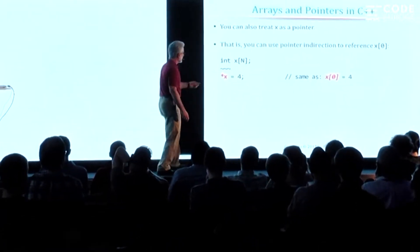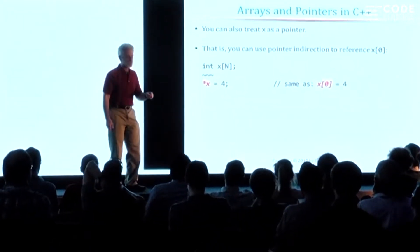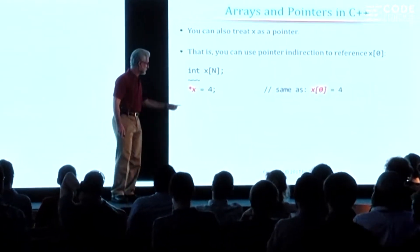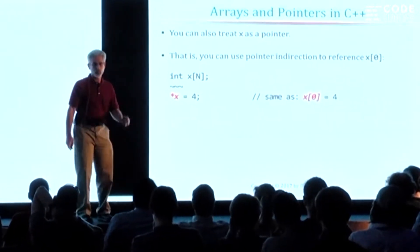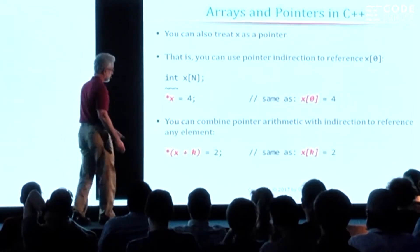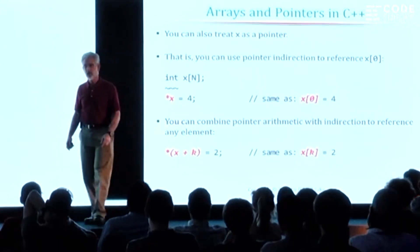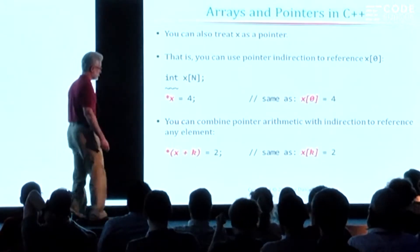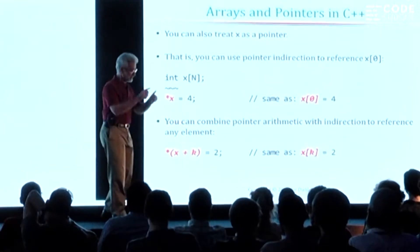So you can do things like this: you can use the unary dereference operator, treating that array name as if it were the name of a pointer, dereference that thing and give me the element that it points to — which is not an entire array, it's a single element of type int. And you can even combine the dereferencing operator with pointer arithmetic to essentially access any element in the array — basically that is the same thing as writing X square bracket K.